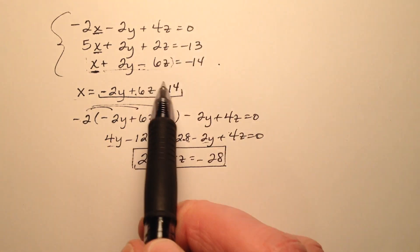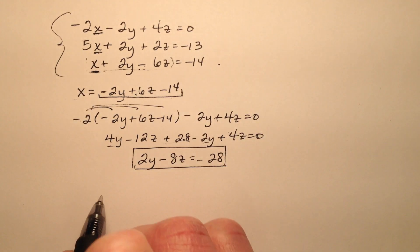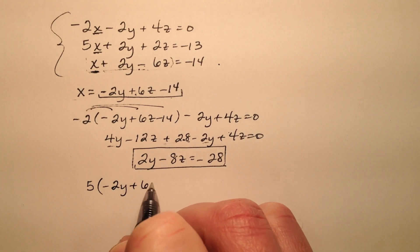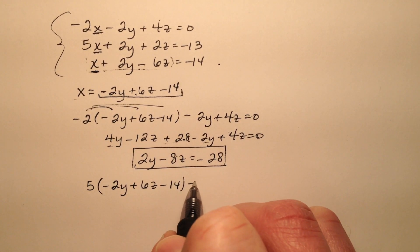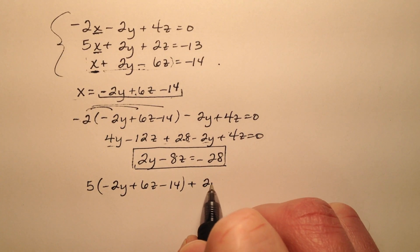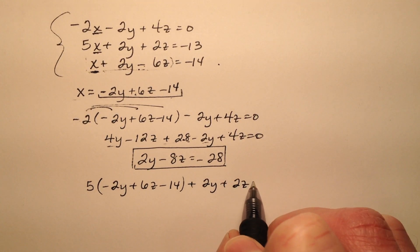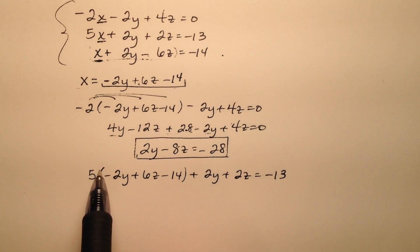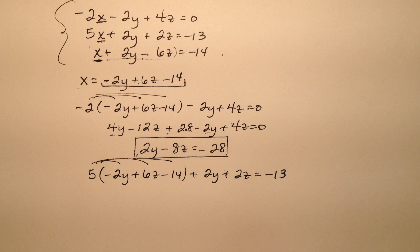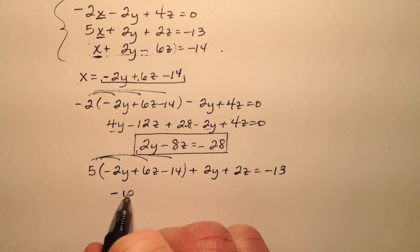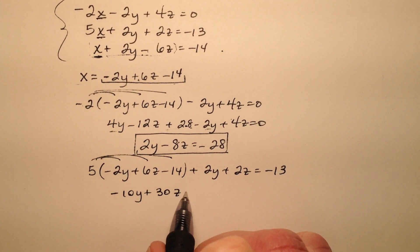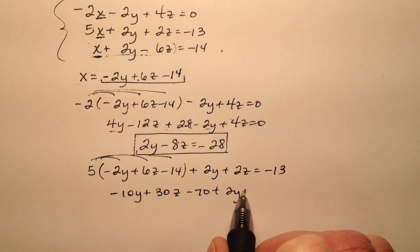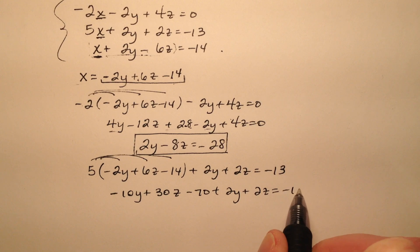Let's go ahead and do that again now to the second equation right here. So 5x, and x again is going to be this expression, and then plus 2y plus 2z, and that equals negative 13. Let's go ahead once again distribute and simplify this a bit. So negative 10y plus 30z minus 70 and the rest of that comes along.